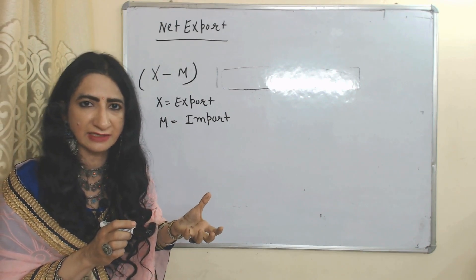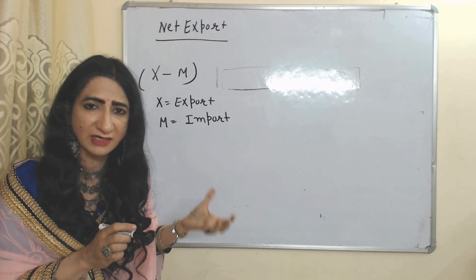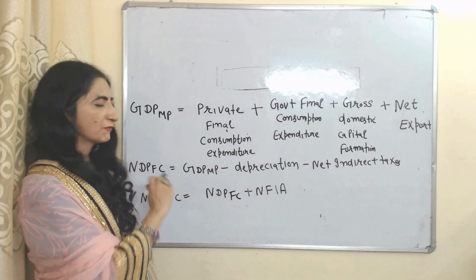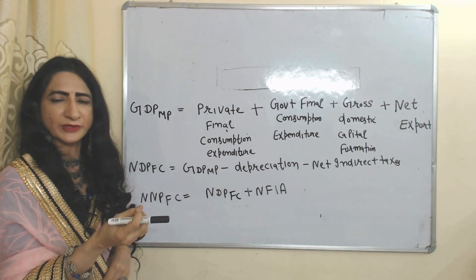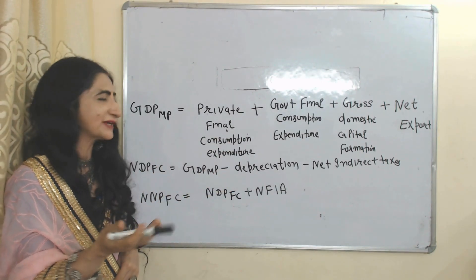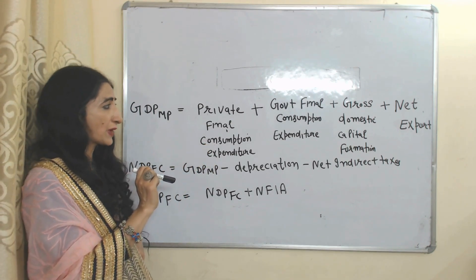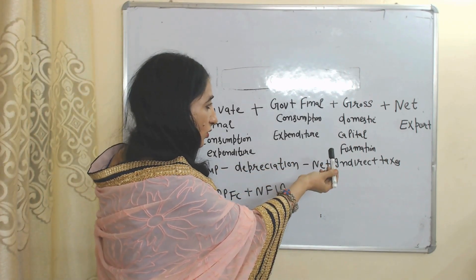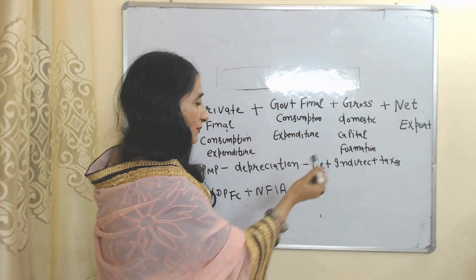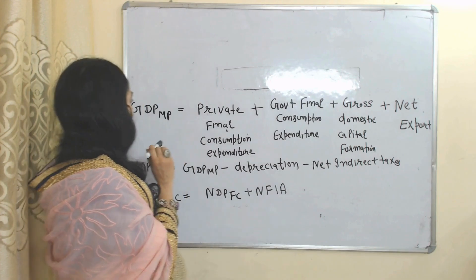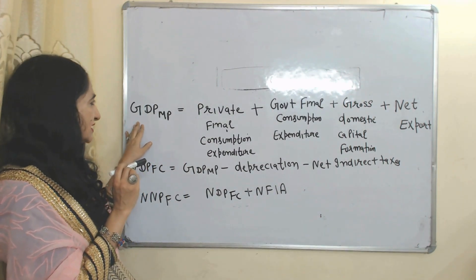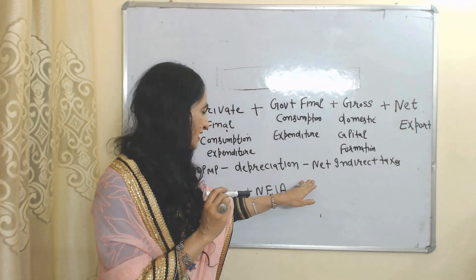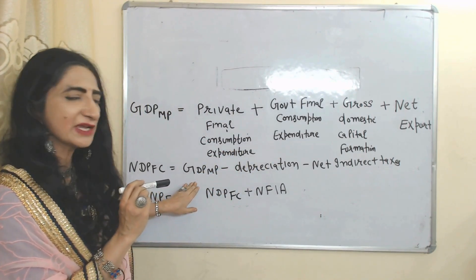Net export tells us how much expenditure was done by foreigners on our country's products. When we add all components of final expenditure — private final consumption expenditure, plus government final consumption expenditure, plus gross domestic capital formation, plus net export — it becomes equal to GDPMP.